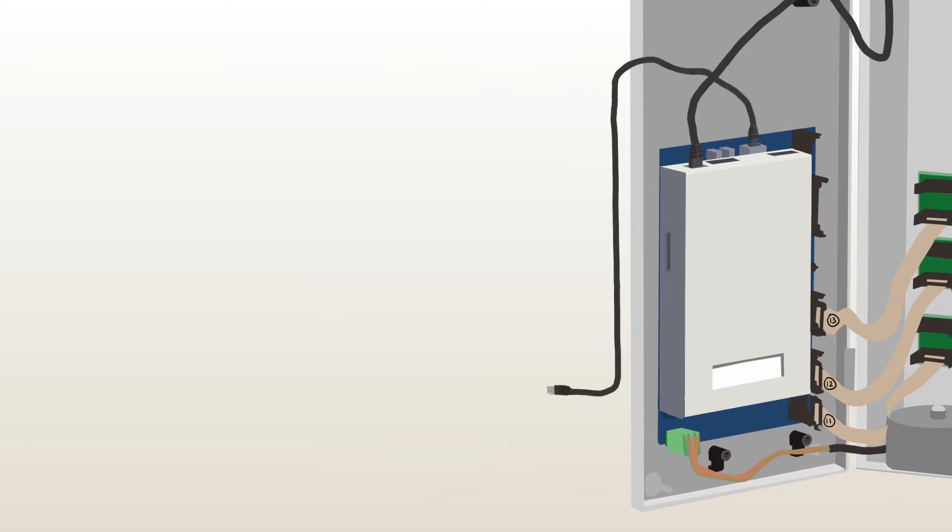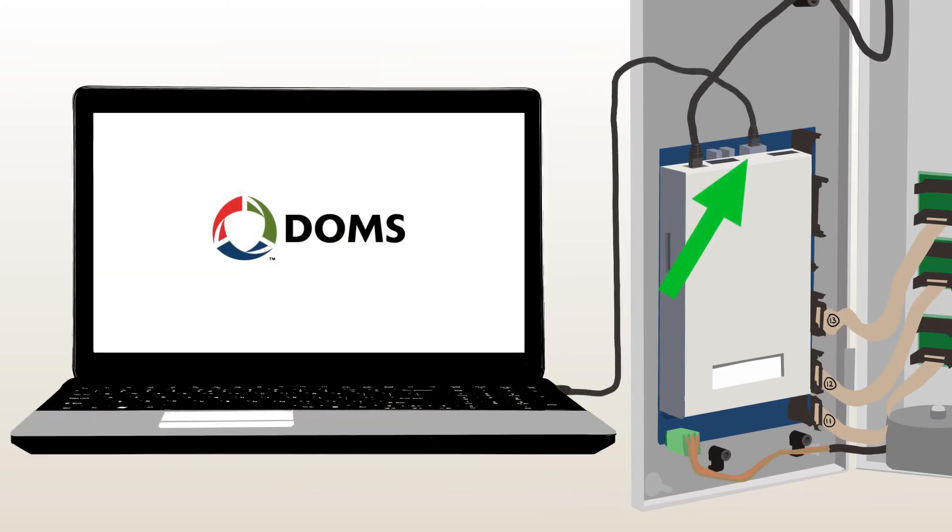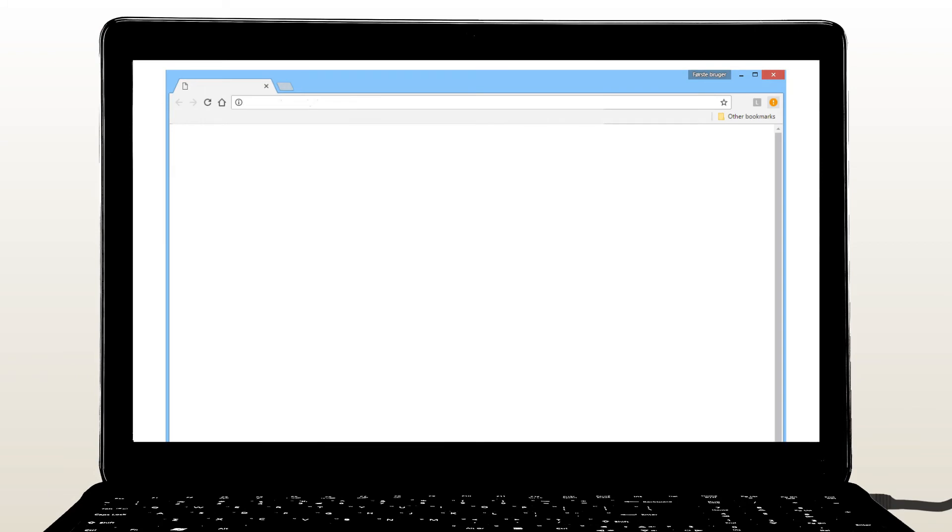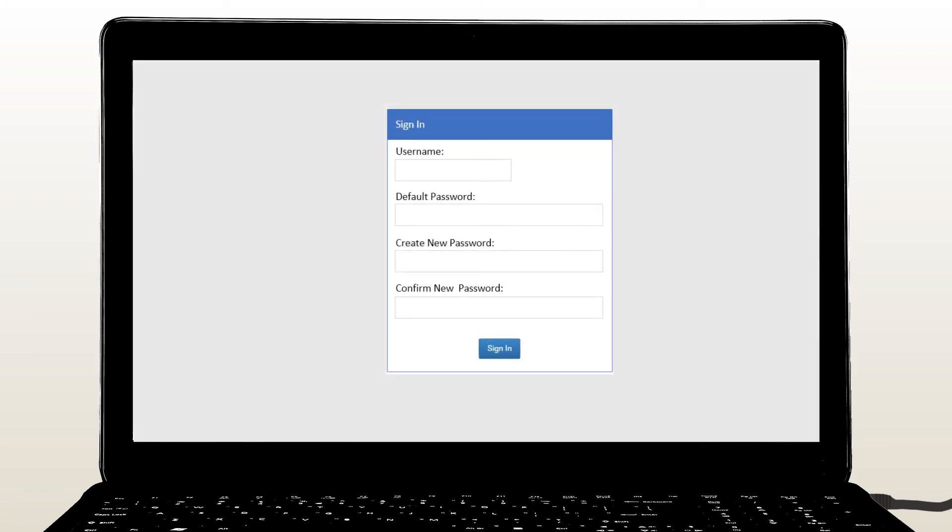Use a patch cable to connect the service PC to port 42 on the CPB 539. Set up the IP address of your service PC so that it is in the same range as port 42. Open a browser and type in the IP address 192.168.42.2. Use the username and password provided in the kit 453 upgrade quick guide. Create a new password and then sign in.